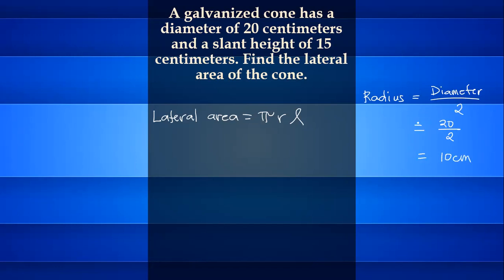This is the radius of the cone, so we can compute the lateral area. 3.14 times the radius, 10 cm, times the slant height, 15 cm.